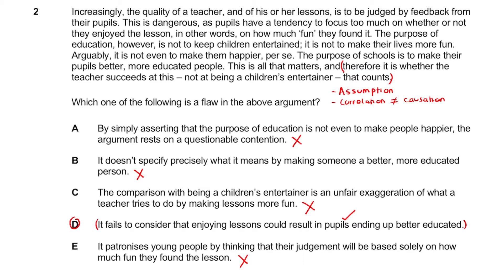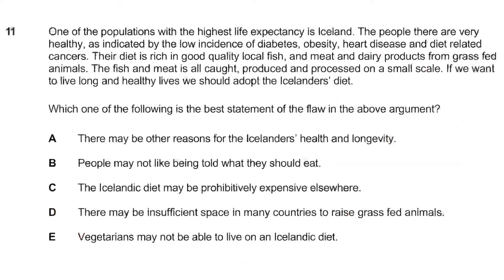So we've looked at BMAT 2019 Question 2 and broken down the key tips for answering flaw questions. Now let's move on to the next question: BMAT 2018 Question 11. The passage states: 'One of the populations with the highest life expectancy is Iceland. The people are very healthy as indicated by the lowest incidence of diabetes, obesity, heart disease and diet-related cancers. Their diet is rich in good quality local fish, meat and dairy products from grass-fed animals, all cold-produced and processed on a small scale. If you want to live a long and healthy life, you should adopt the Icelandic diet.' Which of the following is the best statement of the flaw in the above argument?